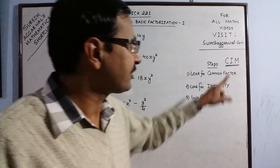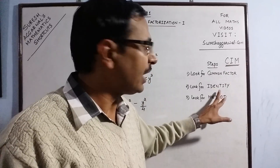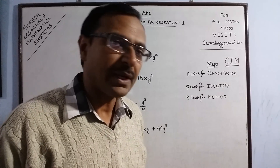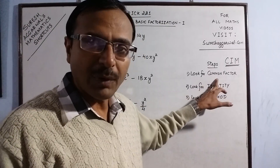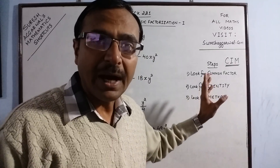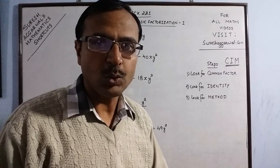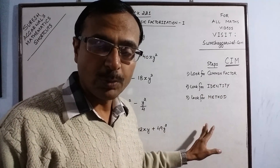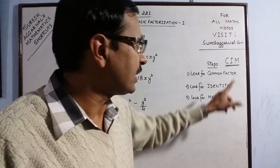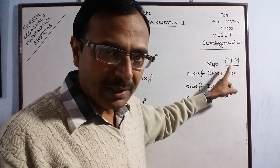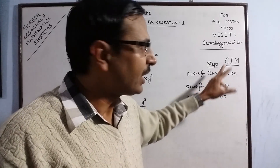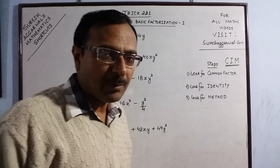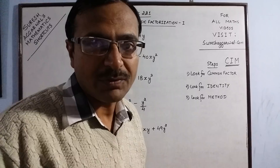If there is a common factor, take it out first. If not, the second step is I — Identity. You know there are basic algebraic identities like (a+b)², (a-b)², (a²-b²), and so on. After finding the common factor, look for the identity being used. If you cannot find any identity, the third step is M — Method. So the three basic steps are C-I-M: C for Common factor, I for Identity, and M for Method. We will do a number of videos on factorization to cover this important concept of algebra.